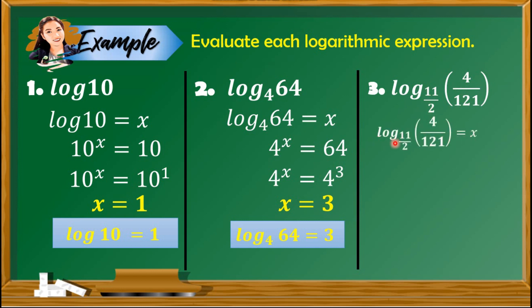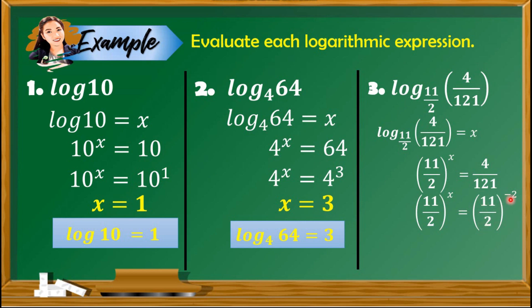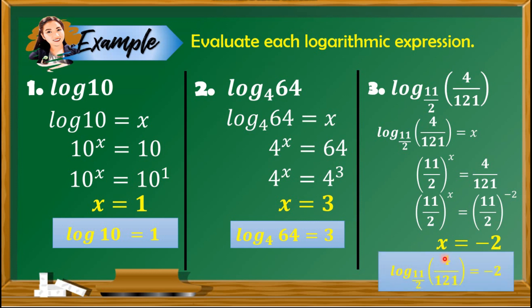Find the value of log base 11/2 of 4/121. Equate to x, then convert to exponential form: 11/2 raised to x equals 4/121. We note that 4 is 2 squared and 121 is 11 squared. Applying the negative exponent rule, 4/121 can be written as 11/2 raised to negative 2. Since the bases are the same, x equals negative 2. So log base 11/2 of 4/121 equals negative 2.